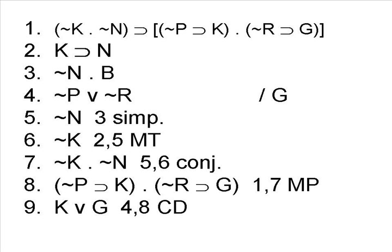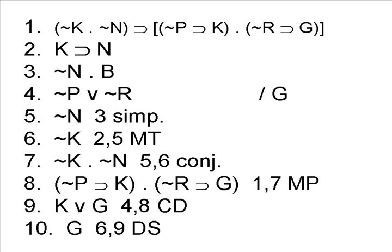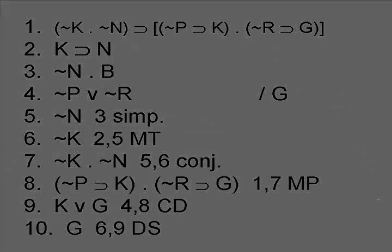Now it's a relatively simple matter to get G out of that line, using a disjunctive syllogism with line 6, which is our last step, step 10. Be sure to practice the proofs in 7.2, section 3, and as always, email me if you have any questions.